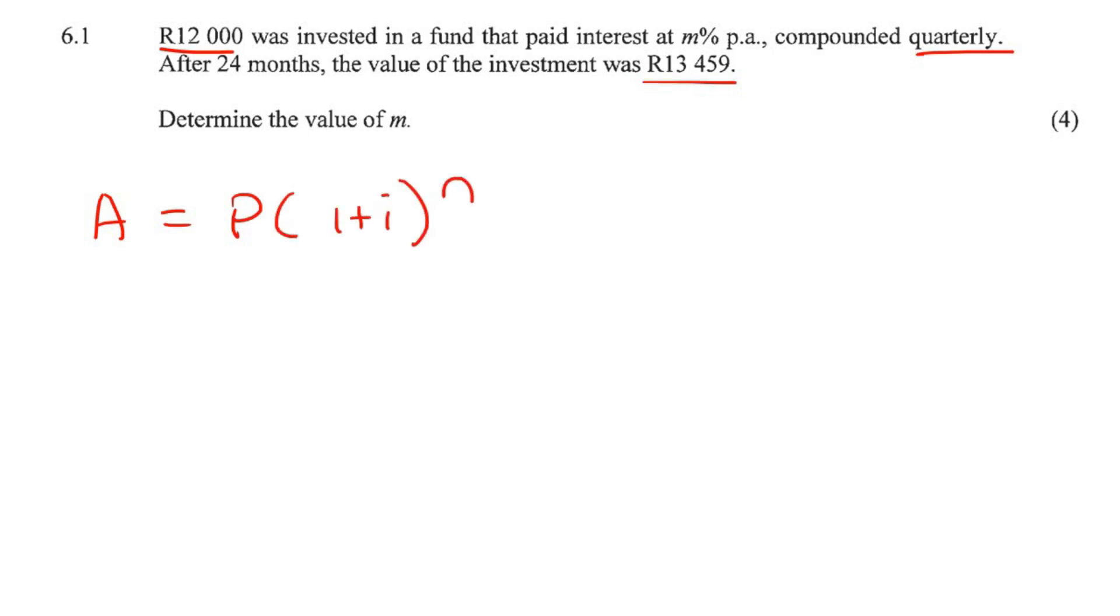If you are a grade 11 learner, you know what I'm talking about, obviously. So we know that the value became that. So we're going to say 13,459. We know that it started as that. The interest rate per year, we don't know. So we're just going to say M.